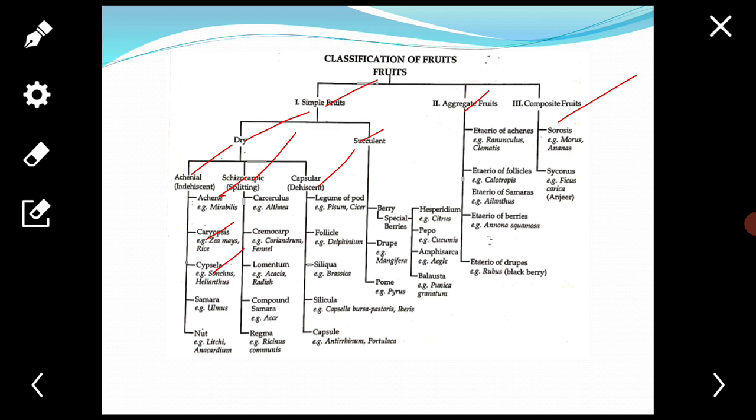One is achene. These fruits are small, one seeded, seed attached to pericarp at one point only. Pericarp is usually radially or easily separable from seed coat. Example is Mirabilis, Clematis, Ranunculus.